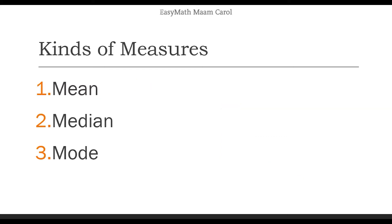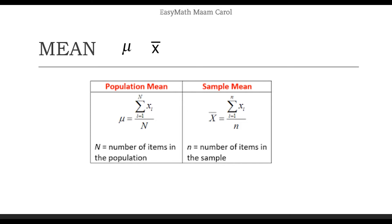Now, there are three kinds of measures of central tendency: we have the mean, the median, and the mode. And I'm sure that you are already familiar with these three. Ngayon, ang emphasis natin dito ay yung process, yung model mismo — mathematical model at saka yung process. Eto yung formula para sa mean. This is mu, Greek alphabet mu, that represents the population mean.